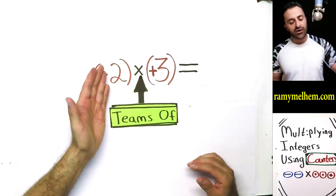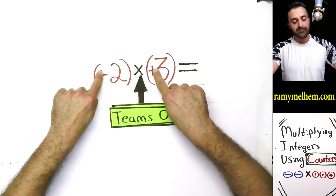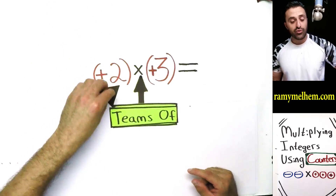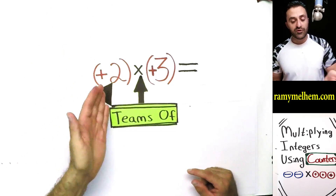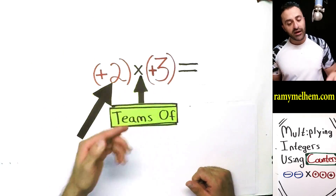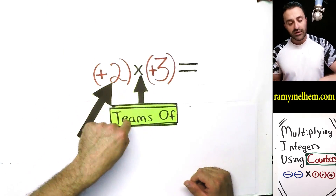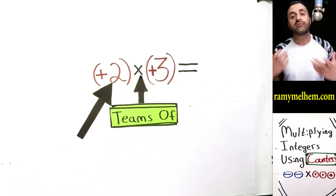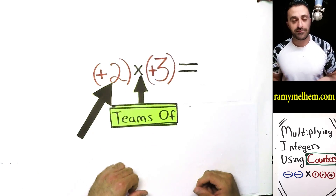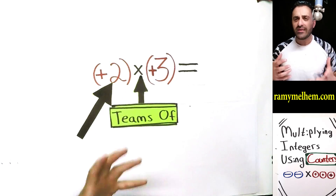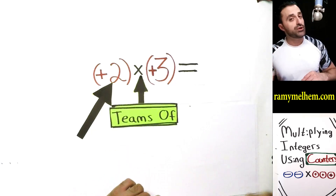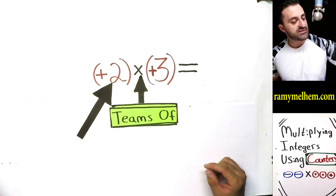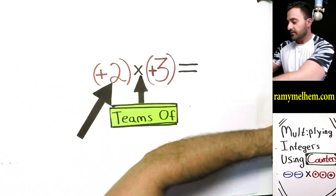Let's ignore these symbols here and look at this two. It just says two — two teams. If you read it left to right, it says two teams of three. So we want to have two teams of three, but what kind of teams? Think of this second number as the kind of players that we need.